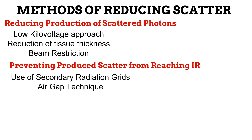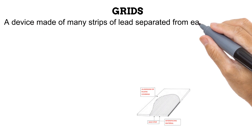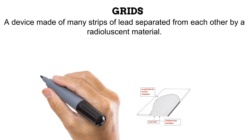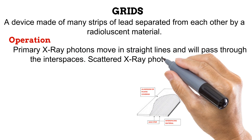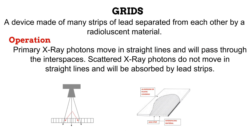We start with grids. A grid is a device made of multiple strips of lead that are separated from each other by a radiolucent material, also known as the interspacing material. The lead strips are arranged side by side. X-ray photons move in straight lines and will pass through the interspaces between lead strips, avoiding absorption by the lead. Scattered photons, however, do not move in straight lines, so most of them would not easily pass through the interspaces and would be absorbed by the lead strips.